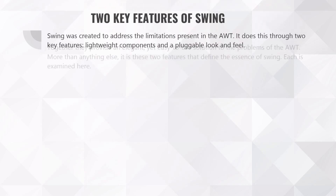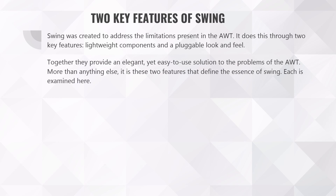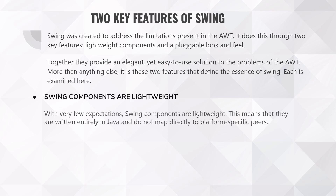Now we'll discuss about the two key features of Swing. Swing was created to address the limitations present in AWT. It does this through two key features: the first is lightweight components, and the second is pluggable look and feel. Together, they provide an elegant yet easy-to-use solution to the problems of AWT. More than anything else, it is these two features that define the essence of Swing.